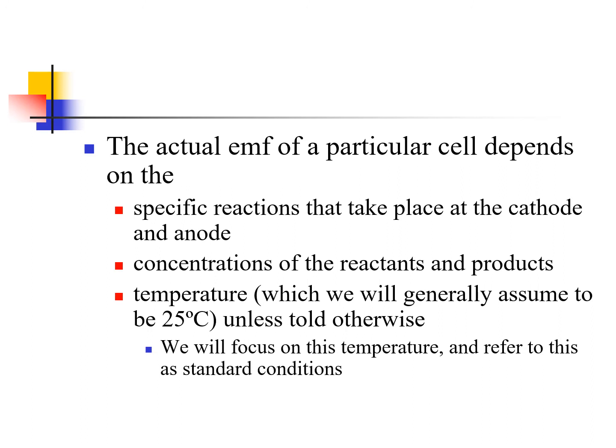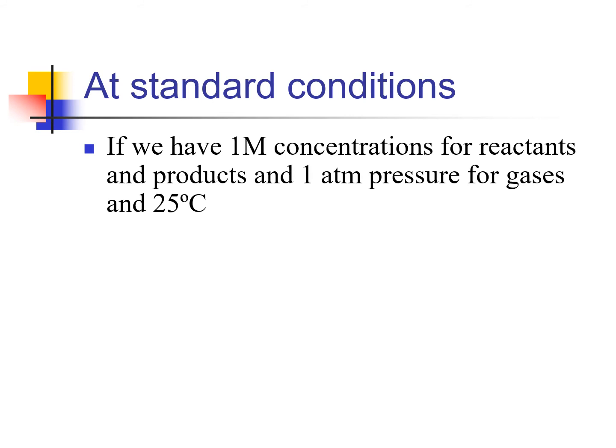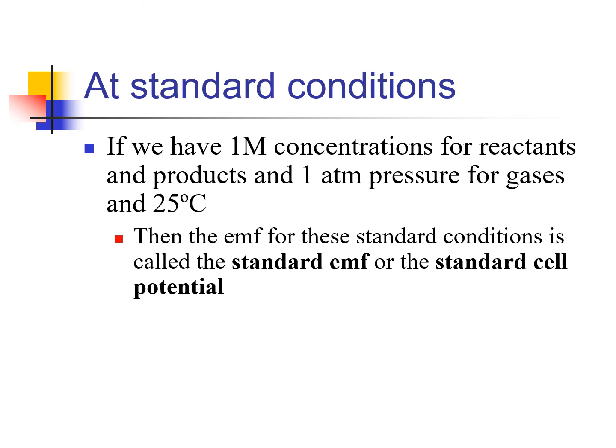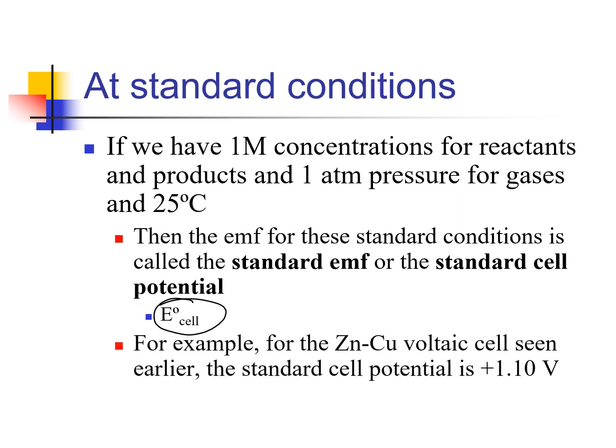The actual EMF depends on the particular reactions, the concentrations, and the temperature. We'll focus on things at 25°C — standard conditions — with one molar concentration. At standard conditions, we call that the standard EMF, standard cell potential, or standard voltage, denoted E°-cell. For example, the zinc-copper voltaic cell has a standard cell potential of 1.10 volts. It is positive because that voltaic cell happens naturally — that reaction is spontaneous.